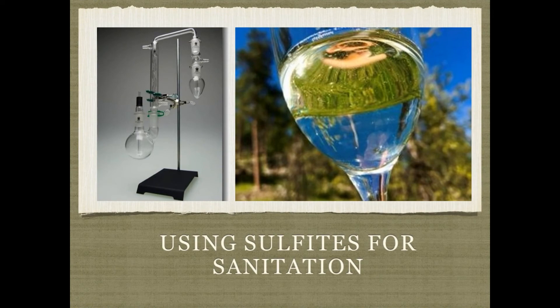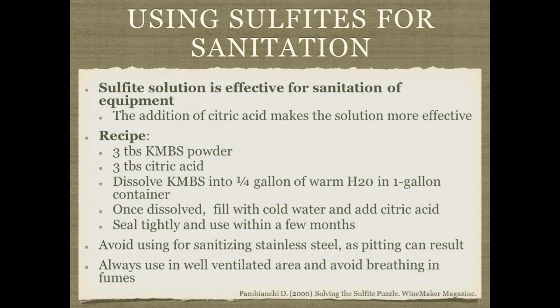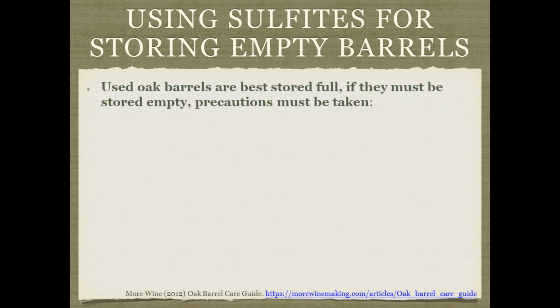For equipment sanitation, you can use a sulfite solution — adding citric acid makes it more effective. One recipe: three tablespoons of potassium metabisulfite with three tablespoons of citric acid dissolved in warm water in a one-gallon container, sealed tightly and used within a few months. Avoid using it on stainless steel as it can cause pitting, wash it off immediately if you do, and don't breathe in the fumes — you'll be coughing and sputtering.